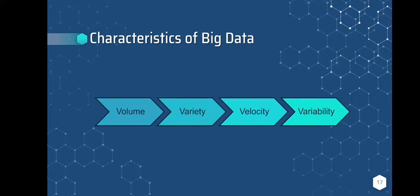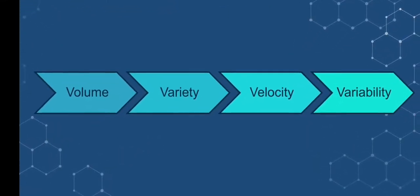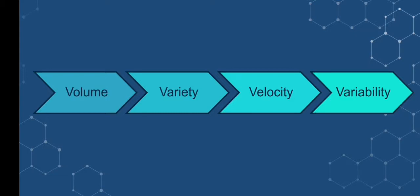Previously, spreadsheets and databases were the only data sources considered by most applications. Velocity refers to the rate at which data is generated; the true potential of the data is determined by how quickly it is generated and processed to meet demands. Big data velocity is concerned with the rate at which data is ingested from sources such as business processes, application logs, networks, social media sites, sensors, and mobile devices — the data flow is massive and continuous. Lastly, variability refers to the inconsistency that data can exhibit at times, impeding the process of effective handling and managing of data.